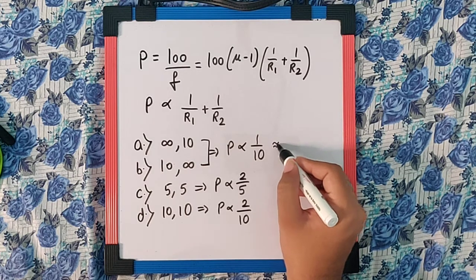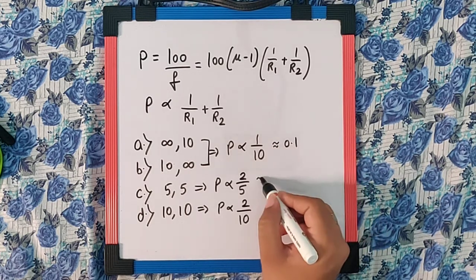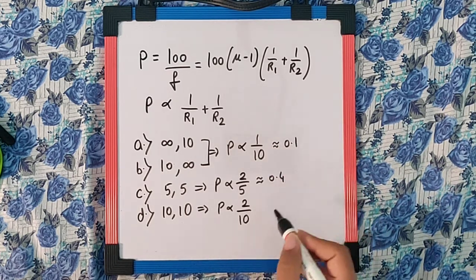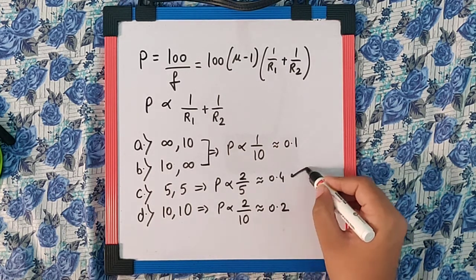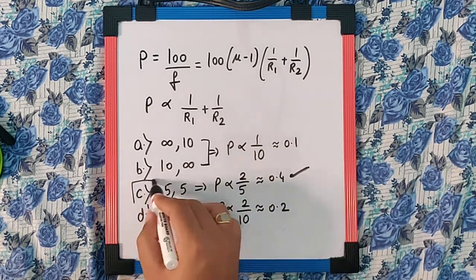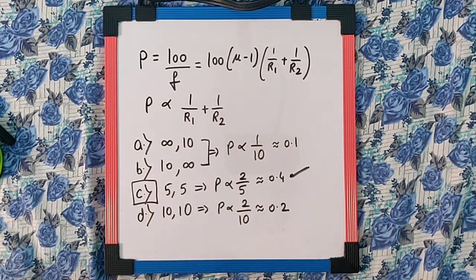Now if we actually calculate this, this is going to be 0.1, this is going to be 0.4 and this is going to be 0.2. So we can say this is going to be the maximum. And so option C is your answer which can give you the largest power.